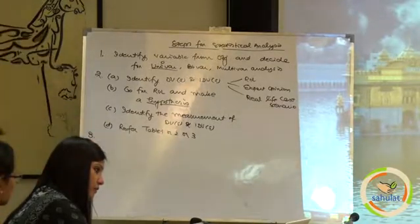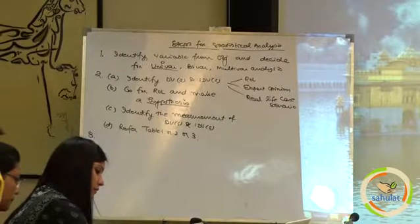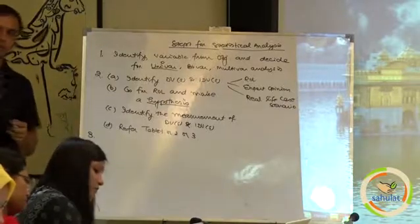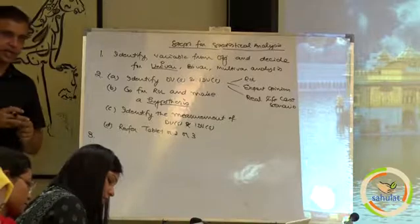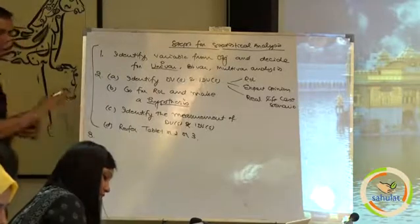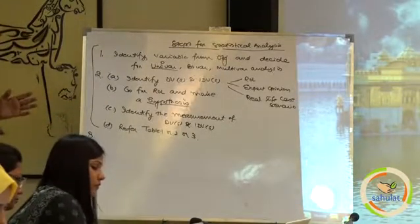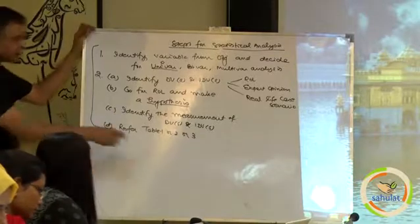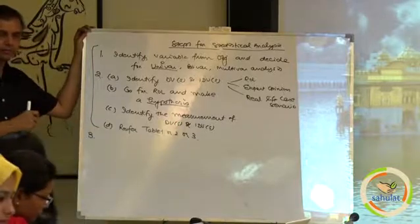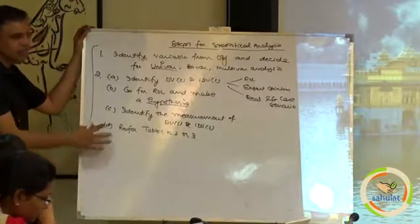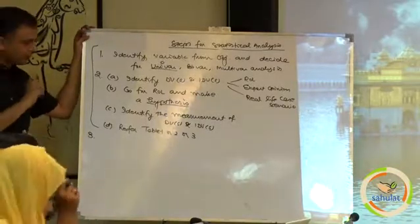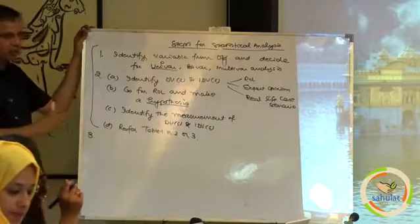From step 3 onwards, things will be separate for separate analyses. If you reach simple regression, step 3 will be according to that. If you reach multiple regression or something else, the rest of the steps will follow accordingly. The first two steps are common for all analyses; from step 3, things differ — for example, if you reach Table 2 logit regression, the steps for step 3 will be different. It is not possible to list all the steps here; that requires a 6-7 day workshop.